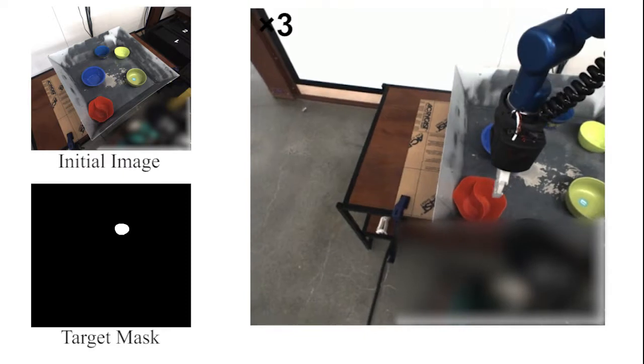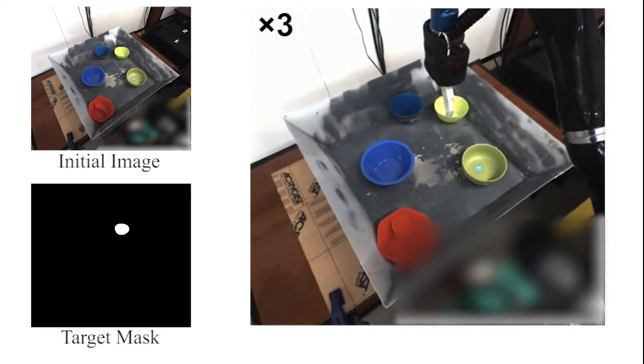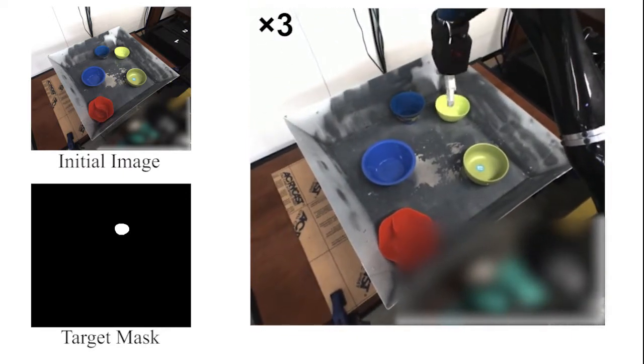In this work, we aim to train a neural network model to control a robot arm to do instance grasping in a cluttered scene.